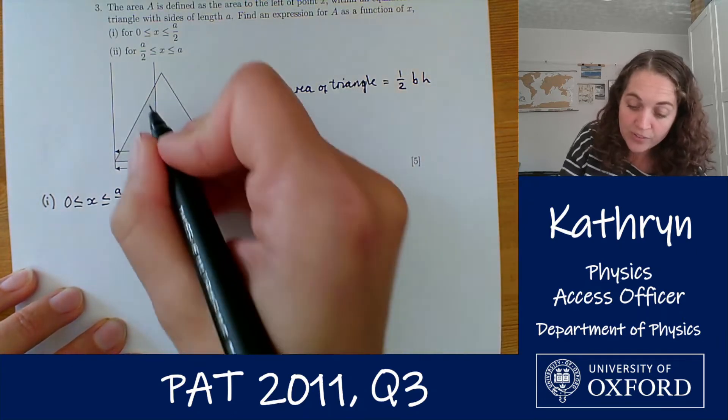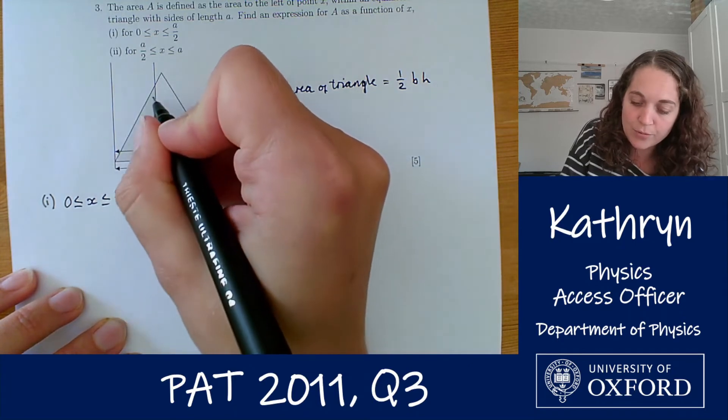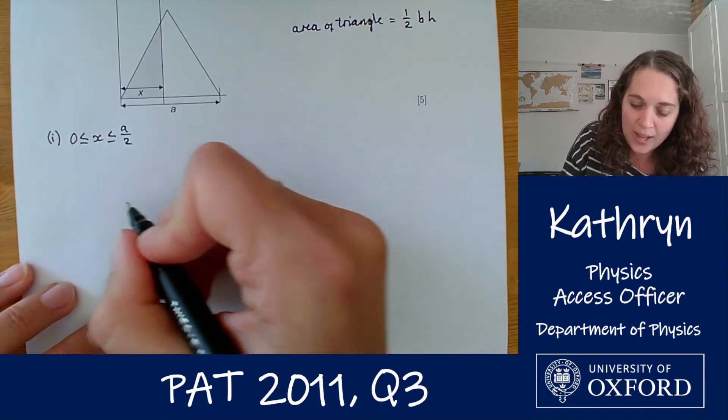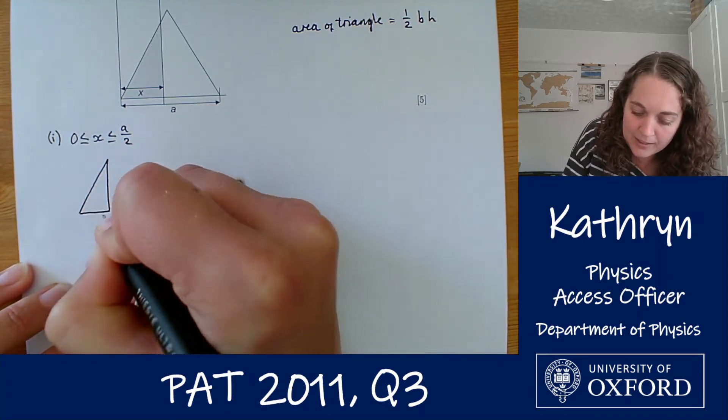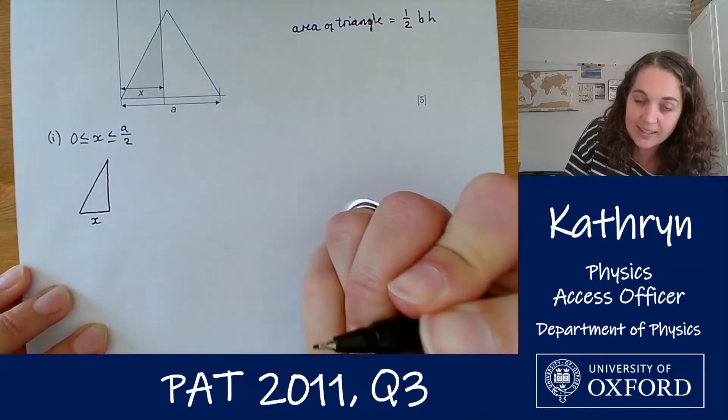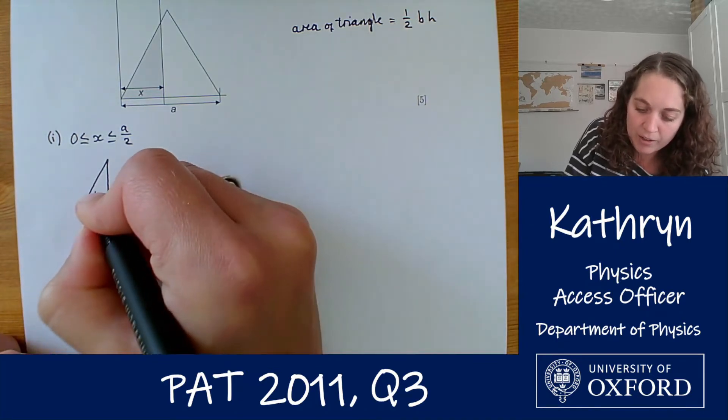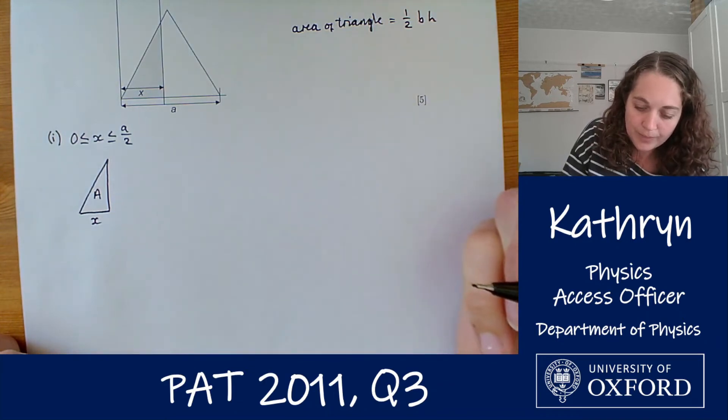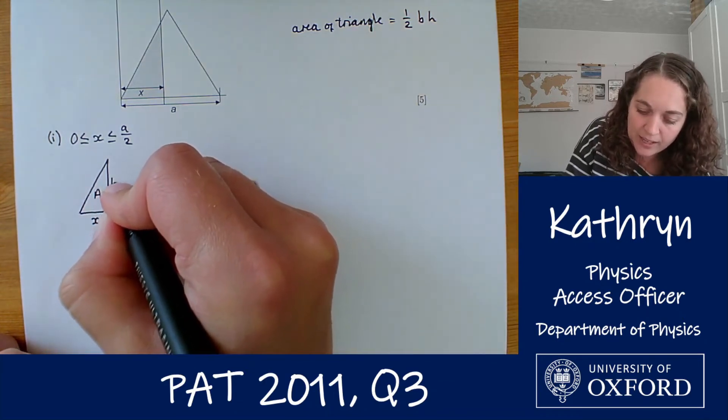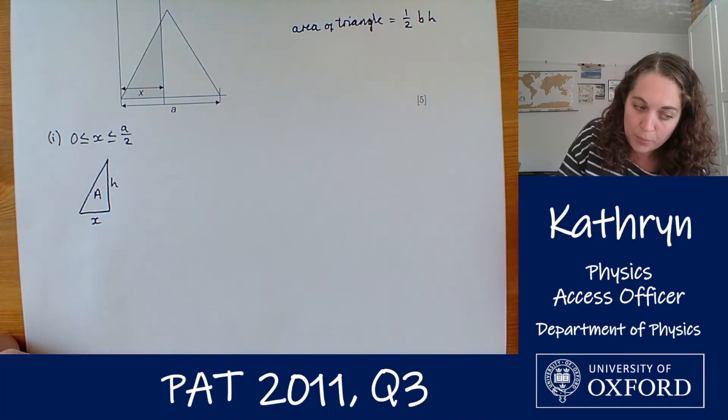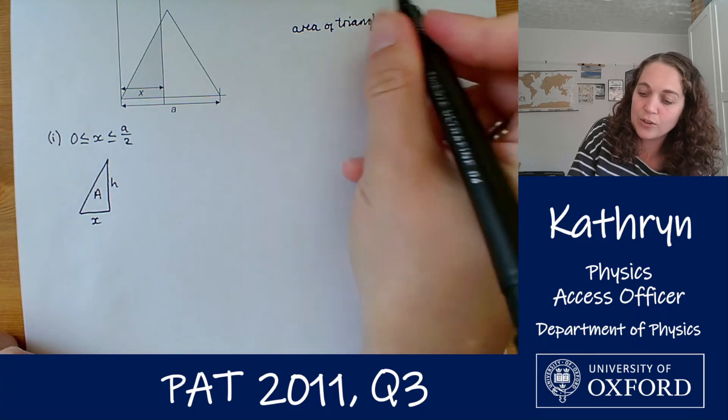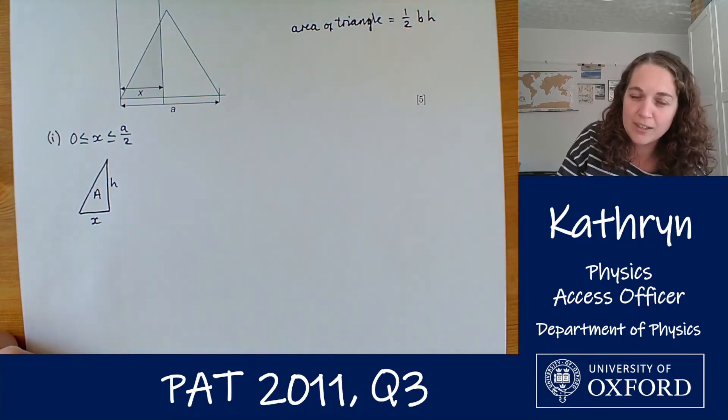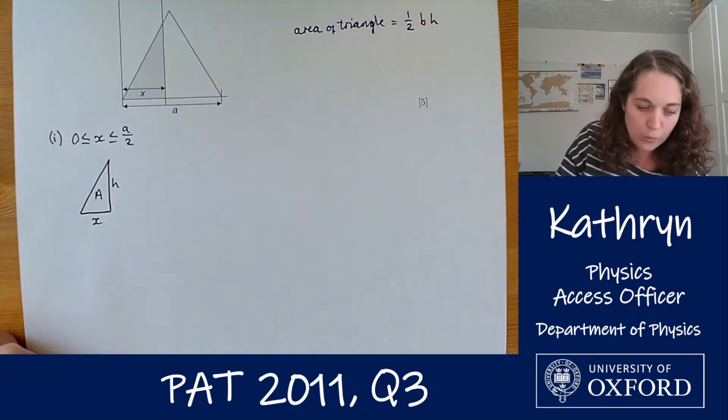So we've got a triangle that looks something like this. We've got X here. We want to know the area of this triangle. If we call this height of this triangle H, what we really need to do is to find an expression for the height in terms of A and X because then if we've got that then we can use our normal area of a triangle formula to find out what the area is.